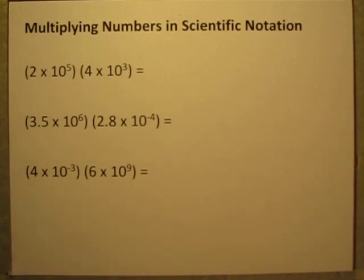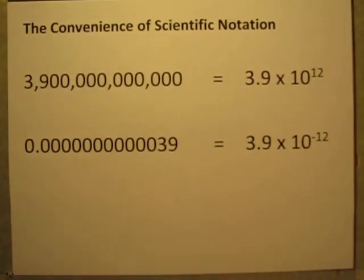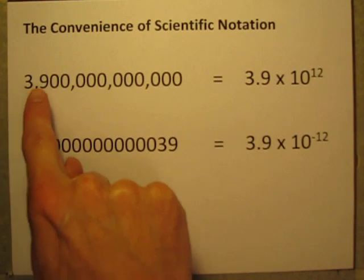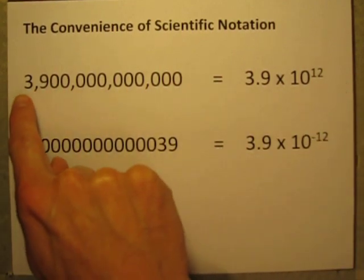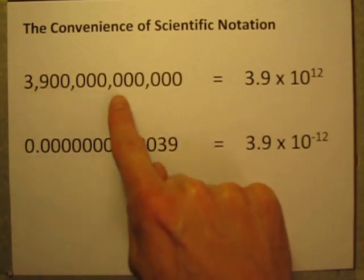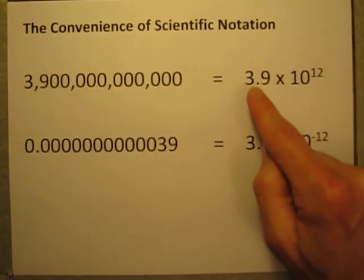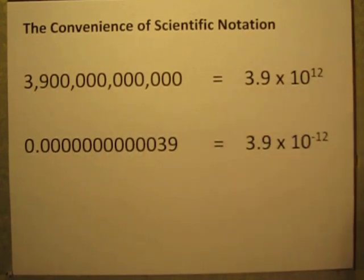Before I show you how to do it, let me show you just a little bit about how scientific notation works. Like I mentioned, it's our way of writing numbers that are either really big or really small. It's a shortcut way. So I can write this number 3,900,000,000,000. I can write it simply as 3.9 times 10 to the 12th power.